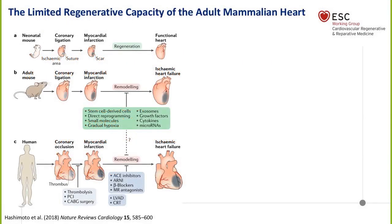As we know, the human heart is one of the least regenerative organs, with cardiomyocyte renewal estimated at less than 2% per year. This increases modestly in response to myocardial infarction, but is wholly insufficient to replace the lost myocardium. A similar lack of proliferation and regenerative response is observed in all adult mammals, and so progression to heart failure can be very well modelled in the mouse.